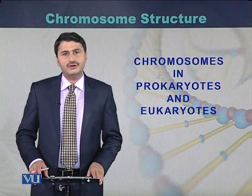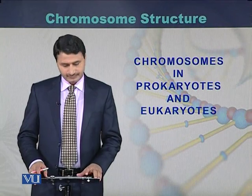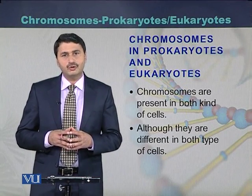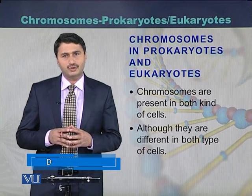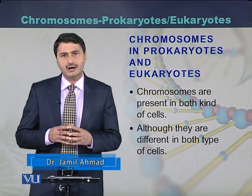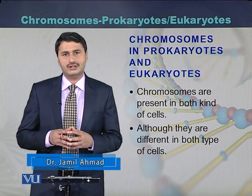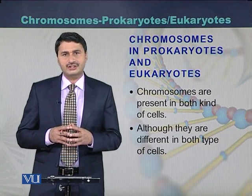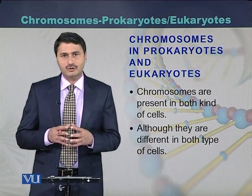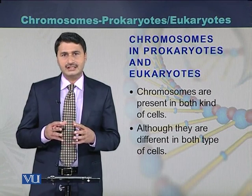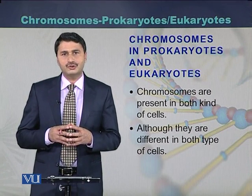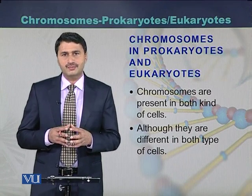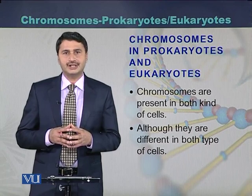Chromosomes in prokaryotes and eukaryotes. Chromosomes are present in both types of cells — in prokaryotic cells and in eukaryotic cells. But there is a difference: in prokaryotic cells there is a single chromosome which is in a circular form, while in eukaryotic cells there can be multiple chromosomes and they are usually in linear shape.